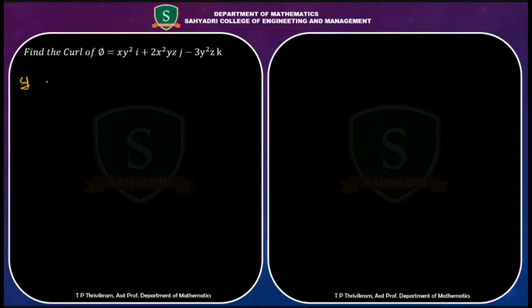What do you mean by the curl? Just write the definition. Curl φ is defined as del cross φ — that is, the del operator cross-producted with φ.